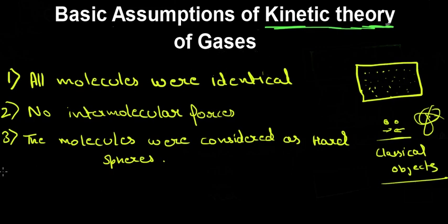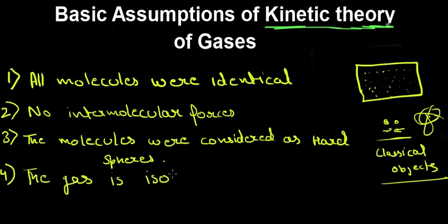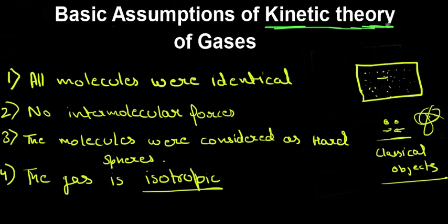The fourth assumption was that the molecules are equally spread — that is, the gas is isotropic. When no external force acts on the gas, the molecules are equally spread in all directions. The word 'isotropic' means that whichever direction you go, you will find the same distribution of molecules.